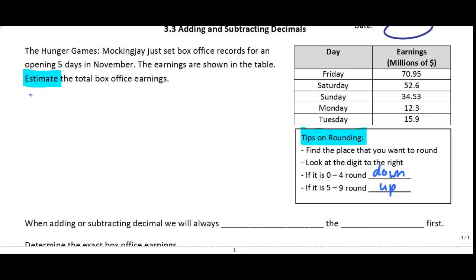Let's look at the Friday earnings. The Friday earnings are $70.95 million. Let's say I want to round that off to this place right here, that zero or that ones column to the nearest million dollars. Then what I'm going to do is I'm going to look next to that and I see that I've got a nine. So if I have anywhere from a five to a nine, then what I'm going to do is I'm going to round up. And so what this means is basically 70.95 is basically 71.